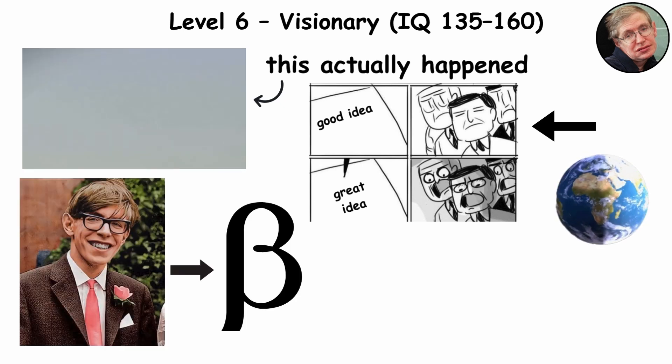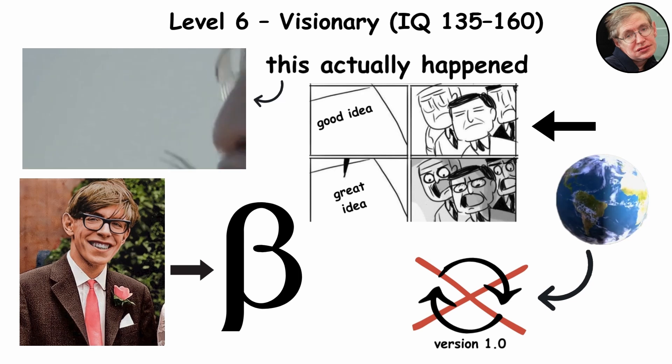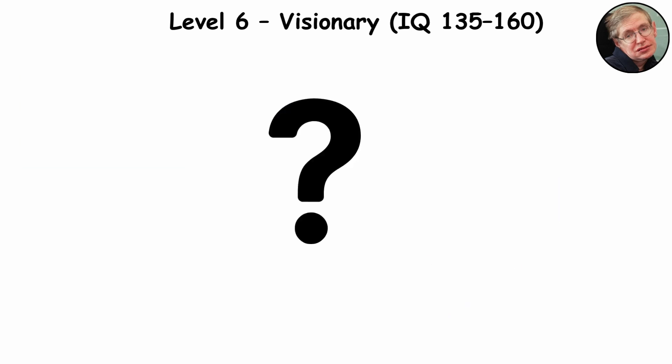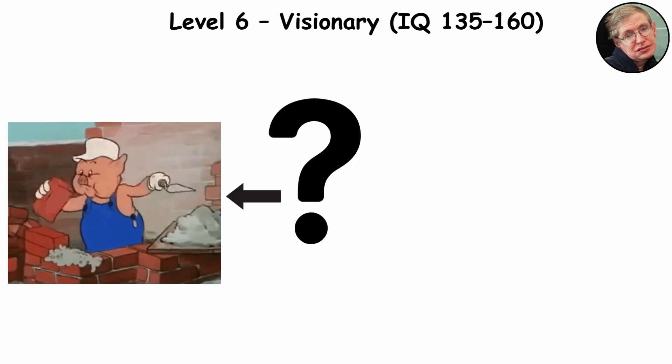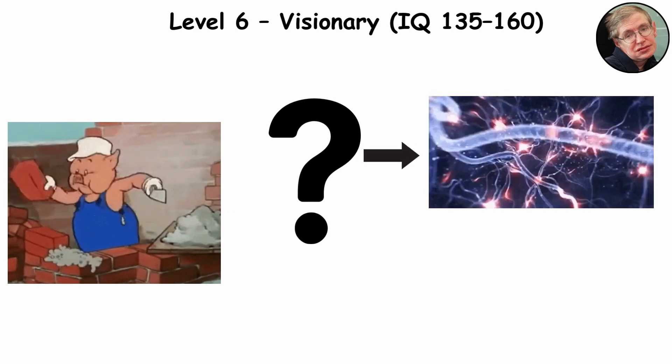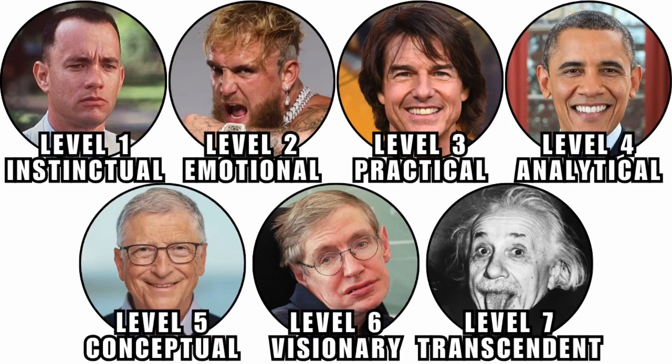Visionaries live in permanent beta. They never see the world as finished, just as version 1.0 and needing an update. But what happens when vision stops being about building the world, and starts becoming about understanding it? Level 7.